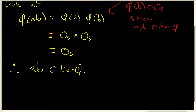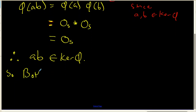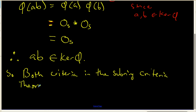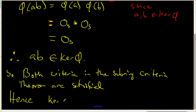At this point, we have satisfied both criteria in the subring criteria theorem. Both criteria are satisfied, and hence we can say that the kernel of phi is indeed a subring of the ring R.